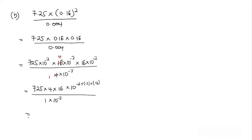We have seven hundred twenty-five multiplied by four multiplied by sixteen. Calculating that: seven hundred twenty-five times four times sixteen gives forty-six thousand four hundred. So we have forty-six thousand four hundred times ten to the power negative six, divided by one times ten to the power negative three.